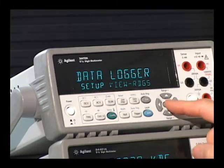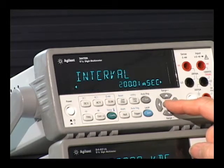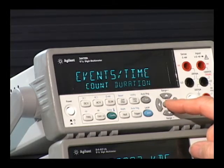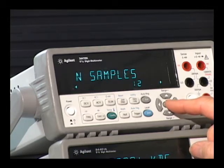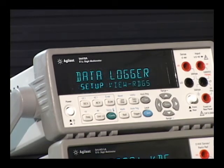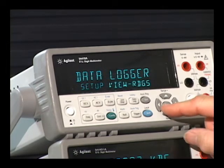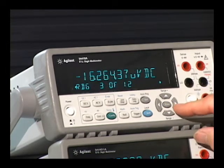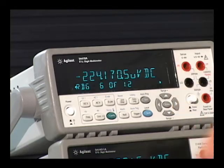As you can see, you can walk through the menu, set up a delay time, sample time, how many counts—in this case I've set it up for 12. I press trigger and it takes the measurements. Now I can view the readings that I just took, and I can store up to 50,000 readings in the 34401A.